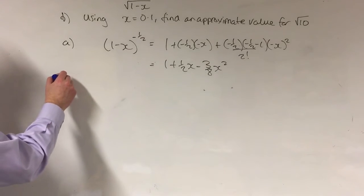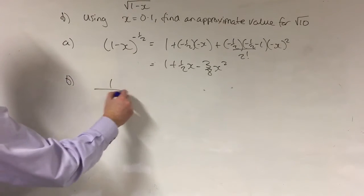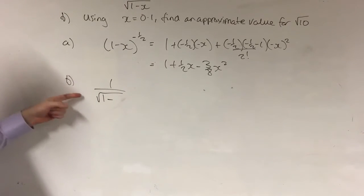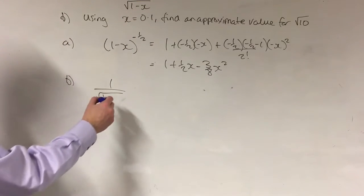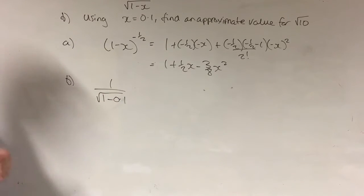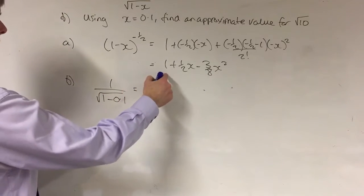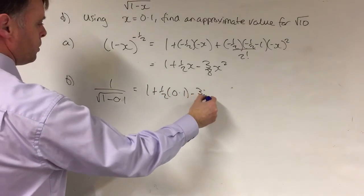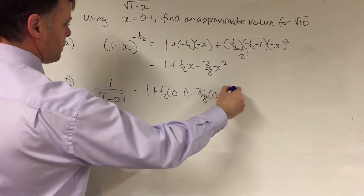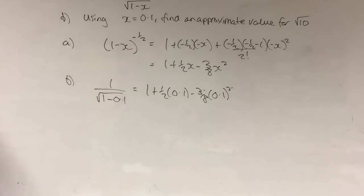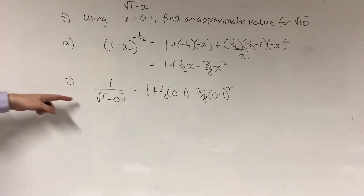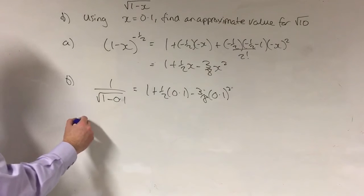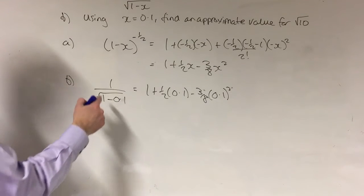What we do now for part B is this. We've got 1 over the square root of 1 minus x, and they tell us x is 0.1, so I'm going to put 0.1 in there for x. And that's equal to this expansion here but with 0.1 written in place of x. As I said, it doesn't look anything like the square root of 10 yet, but I need to do a little manipulation and see what we get.